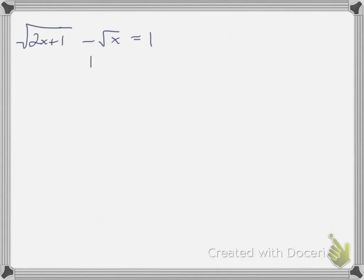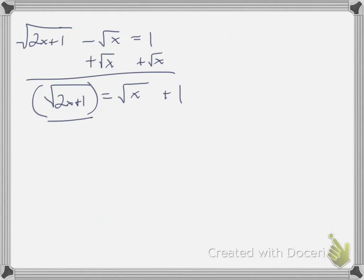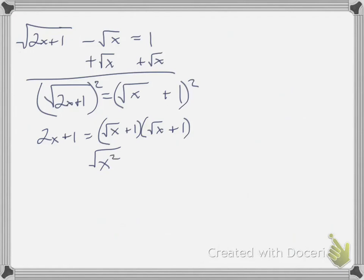Okay, on this one I have two radicals, but I'm going to do the same thing. I'm going to get this radical by itself first. So I'm going to add the square root of x. 2x plus 1 is equal to the square root of x plus 1. Understand that plus 1 is not inside that radical. So now to get rid of this radical on this side, I'm going to square both sides. Okay, and what happens? This becomes just 2x plus 1. Because this is a binomial, I need to write it out twice and FOIL or multiply twice. And it becomes square root of x squared plus square root of x plus square root of x plus 1.